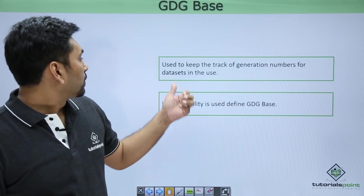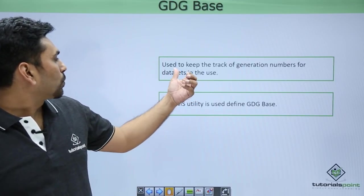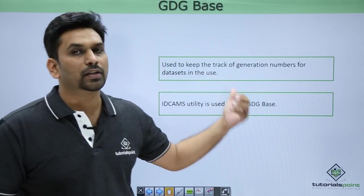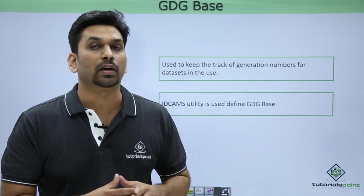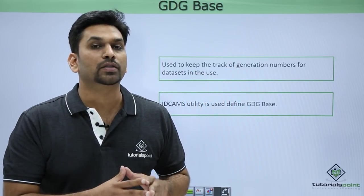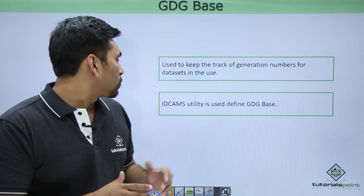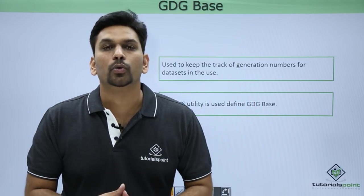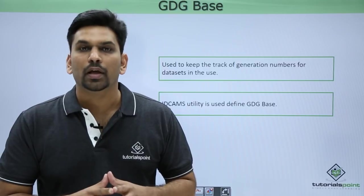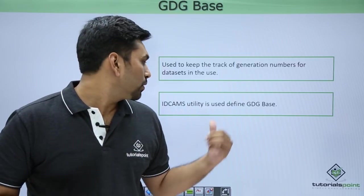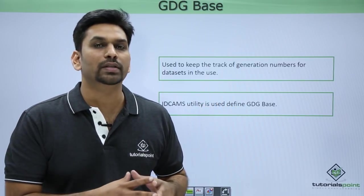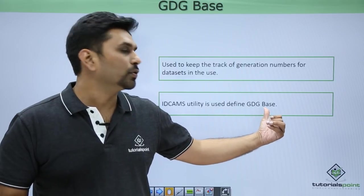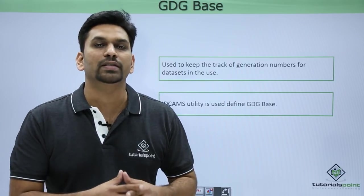The GDG base is used to keep track of generation numbers for data sets. It does not contain actual data - actual data is stored in GDG data sets. The IDCAMS utility is used to define the GDG base. You can do it using the 3.2 option as well as from JCL itself, where you code the IDCAMS utility and define a GDG base inside it.